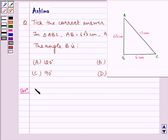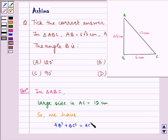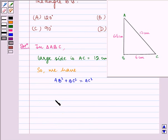Now let us write the solution. In triangle ABC, larger side is AC which is equal to 12 cm. So, we have AB² + BC² = AC². That is, (6√3)² + 6² = 12².